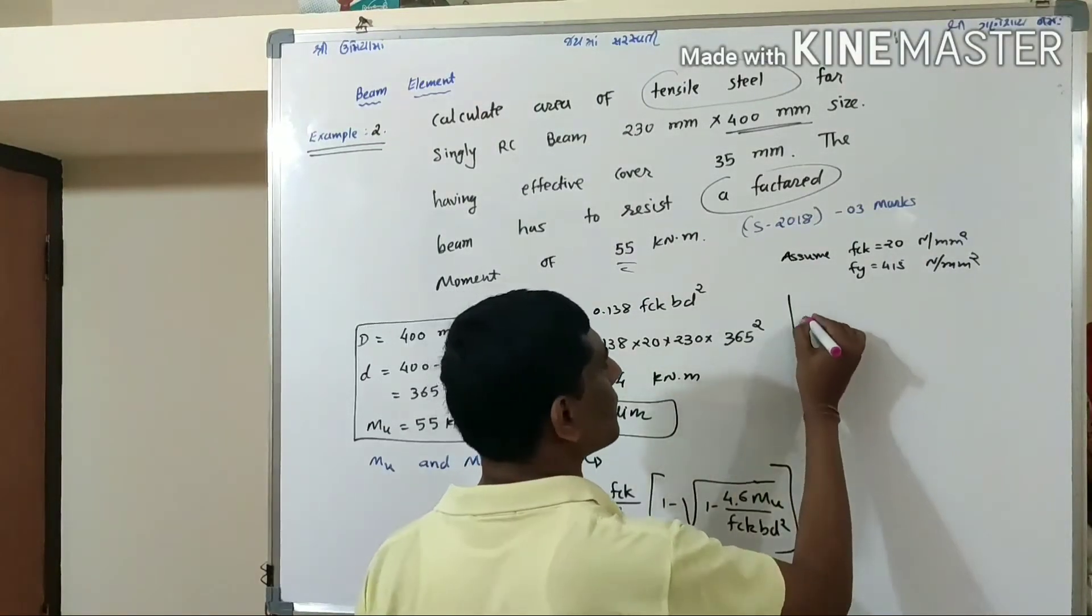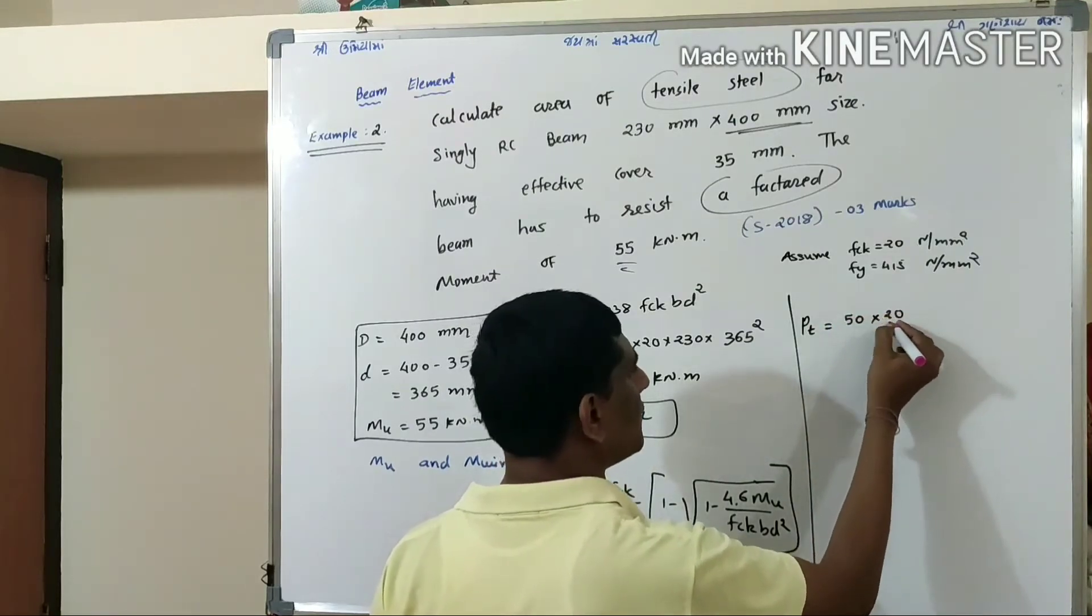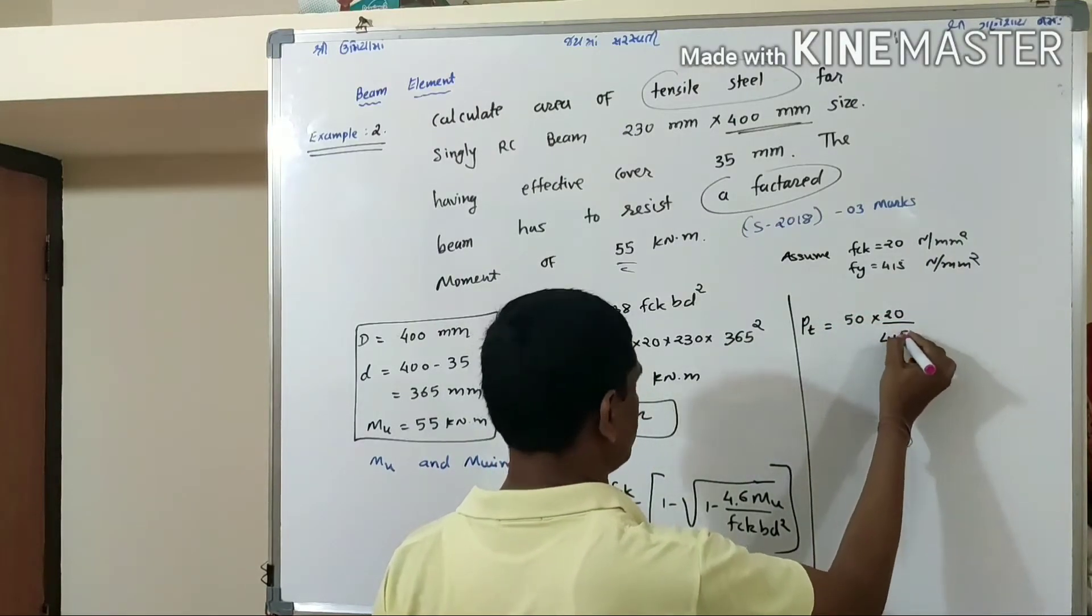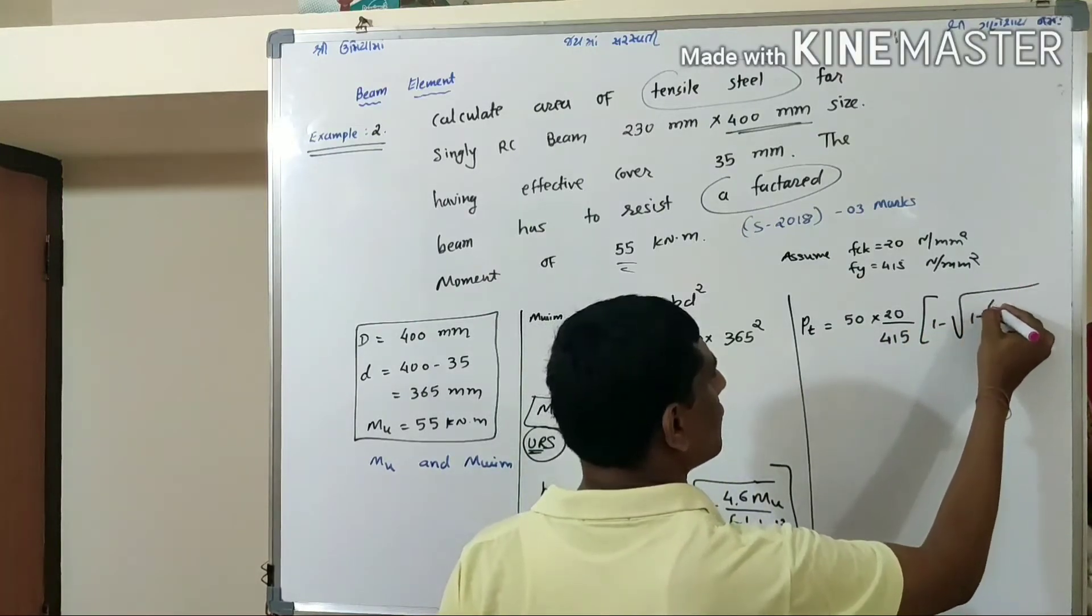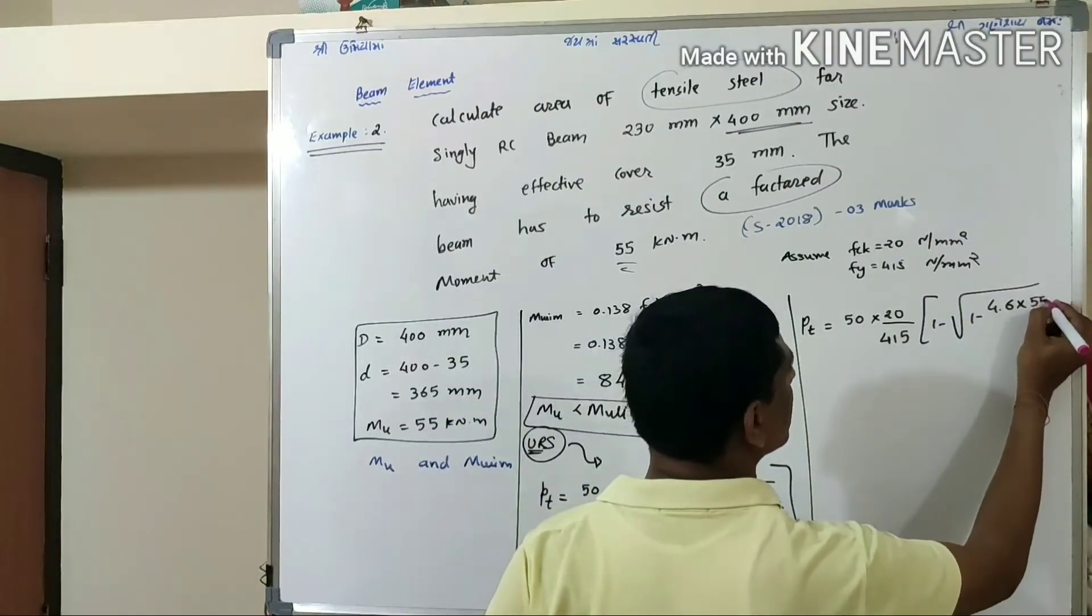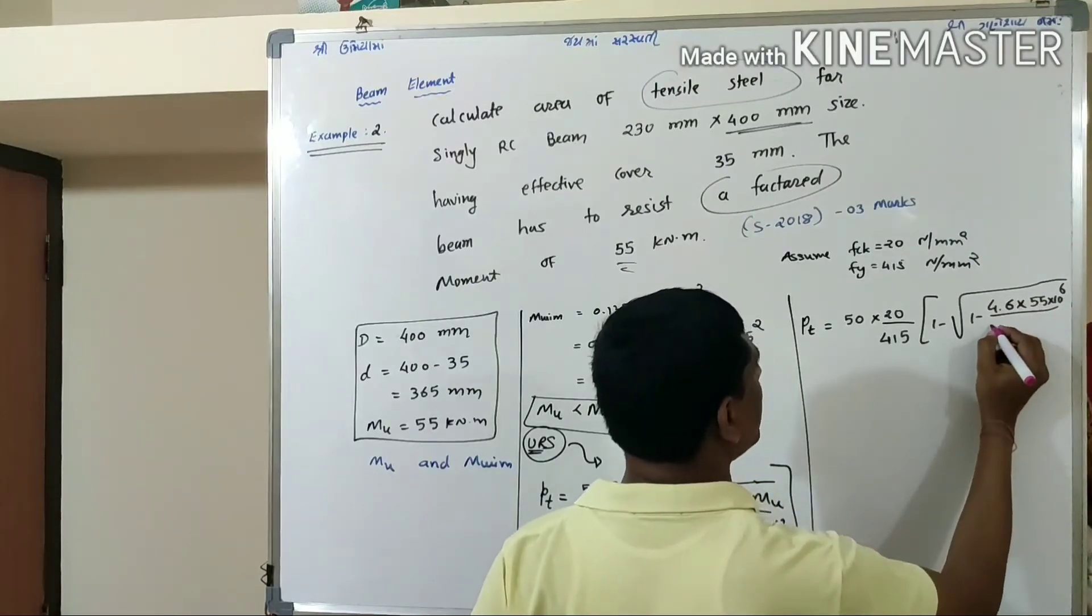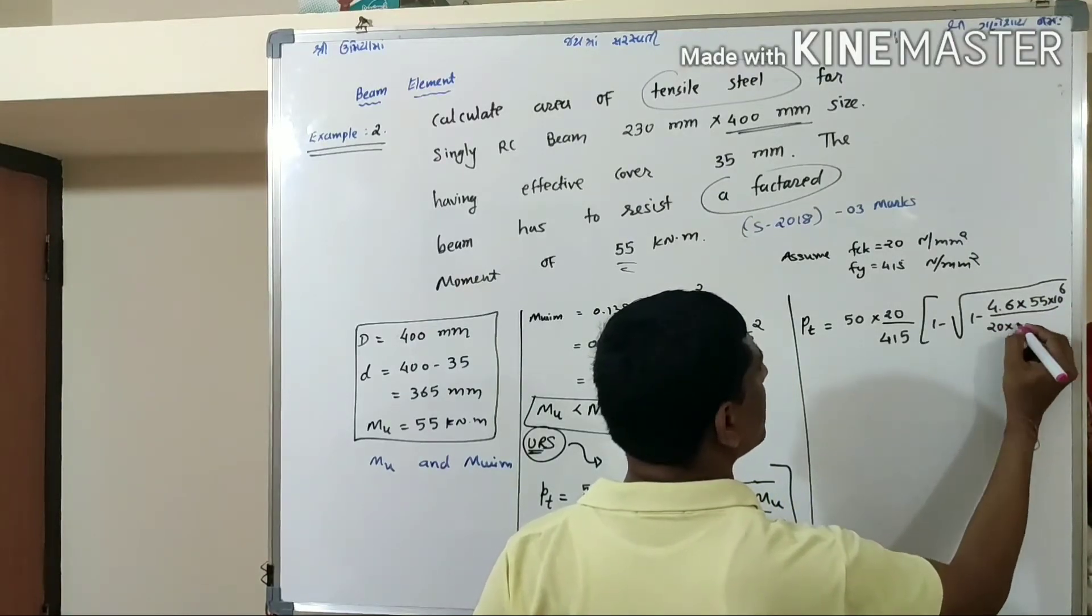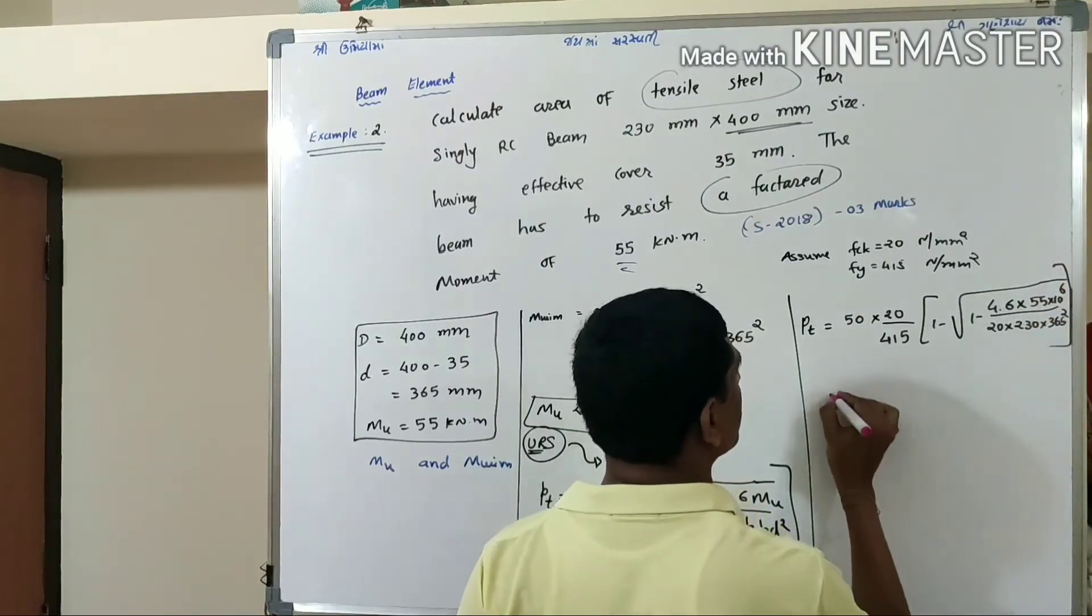So let's put the values. PT = 50 FCK/FY [1 - sqrt(1 - 4.6 mu/(FCK BD²))]. So PT = 50 × 20/415 × [1 - sqrt(1 - 4.6 × 55×10⁶/(20 × 230 × 365²))].